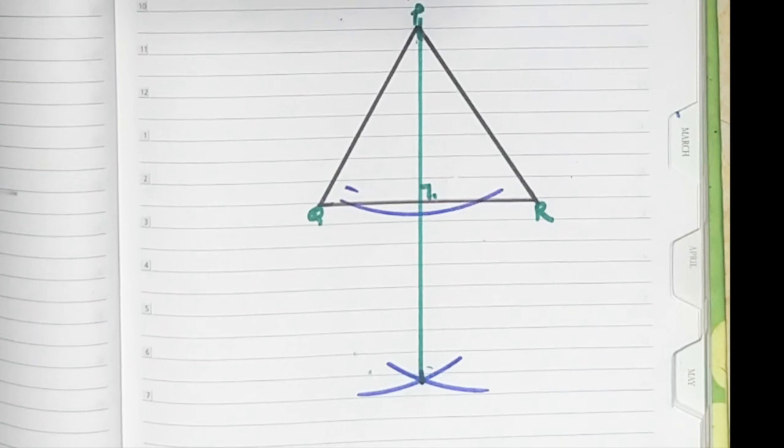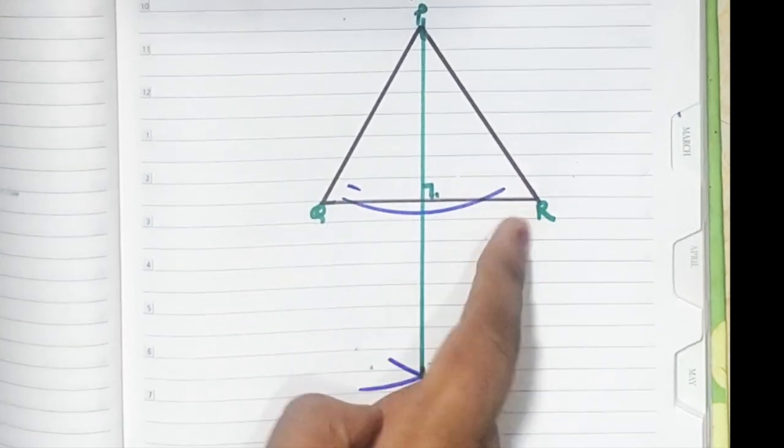Now let's draw the other two altitudes. Now one from P is done. Now you have to draw from Q and from R.